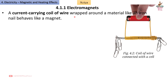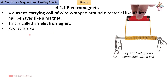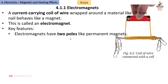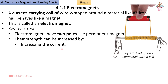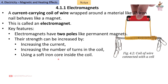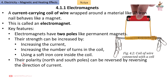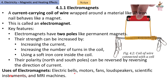4.1.1 Electromagnets: A current-carrying coil of wire wrapped around a material like an iron nail behaves like a magnet — this is called an electromagnet. Key features: electromagnets have two poles like permanent magnets; their strength can be increased by increasing the current, increasing the number of turns in the coil, or using a soft iron core. Their polarity (north and south poles) can be reversed by reversing the direction of current. Uses: electric bells, motors, fans, loudspeakers, scientific instruments, and MRI machines.